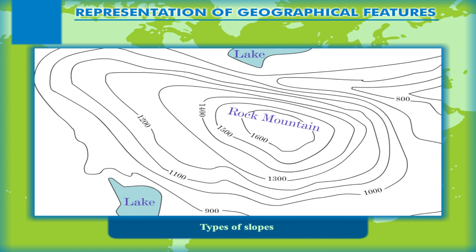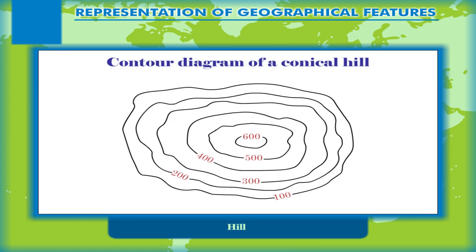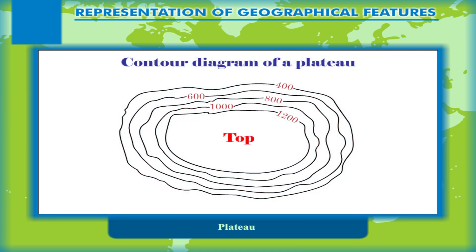It is very important to know and understand how some of the relief features are represented by typical contour patterns. Hill: A conical hill rises almost uniformly from the surrounding regions and can be shown with the help of almost concentric contour lines spaced regularly. Plateau: A plateau is a flat-topped highland rising abruptly above the surrounding region. The top of a plateau is almost flat with very few contours, whereas its sides are shown by closely spaced contours.